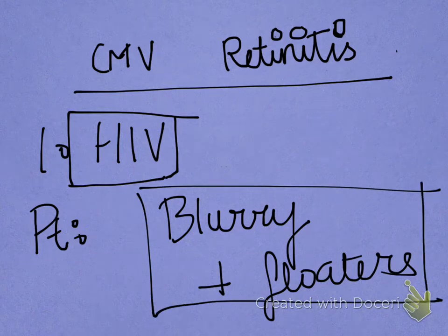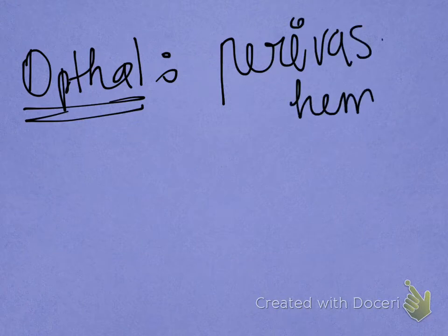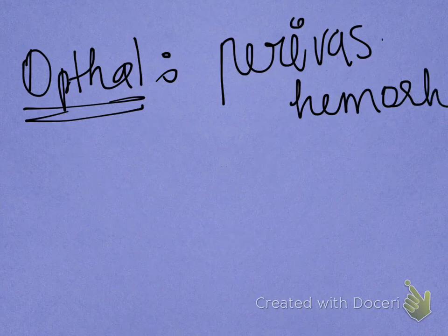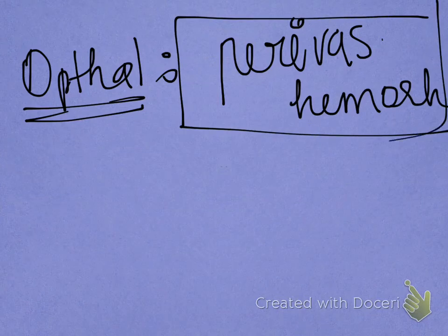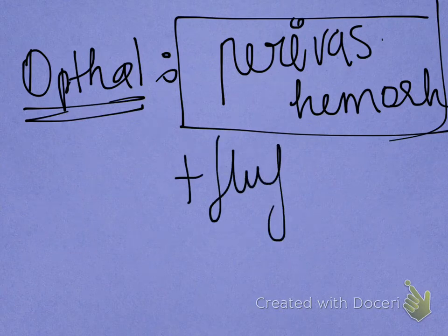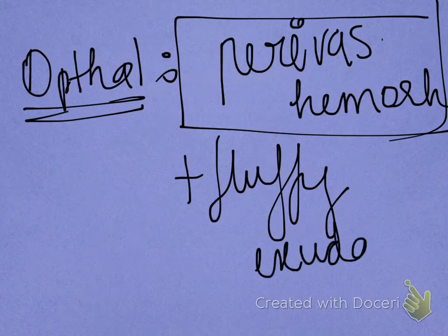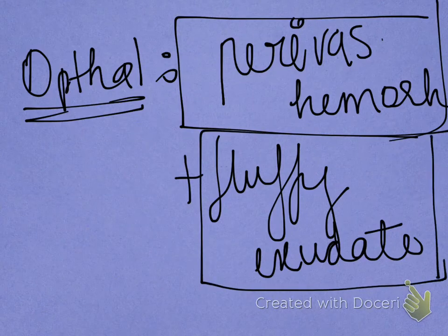At this time, the doctor will do an ophthalmologic examination, mostly with a fundoscope. And what he will see is perivascular hemorrhage. This happens because the blood leaves the vessels and deposits around the vessels. They will also see fluffy infiltrates — it is almost pathognomonic, meaning very characteristic of CMV retinitis. Fluffy exudates.